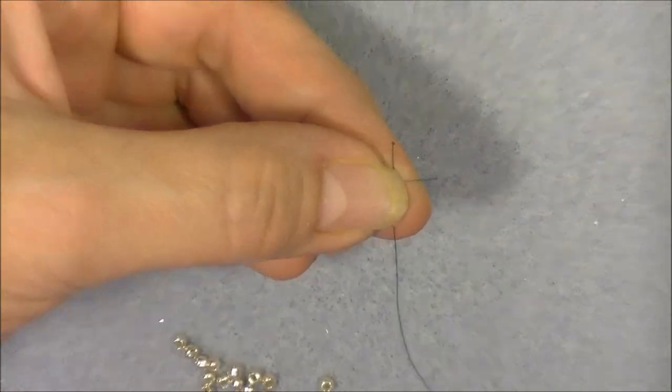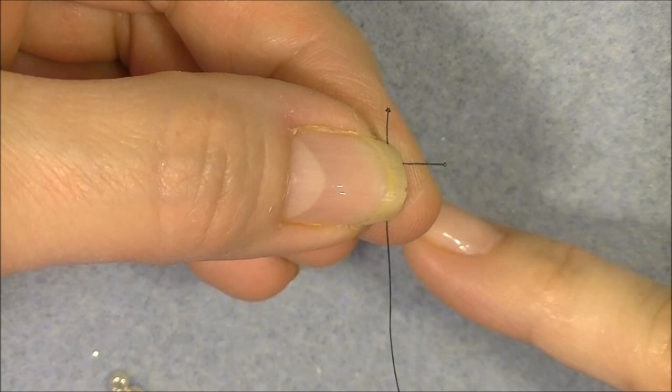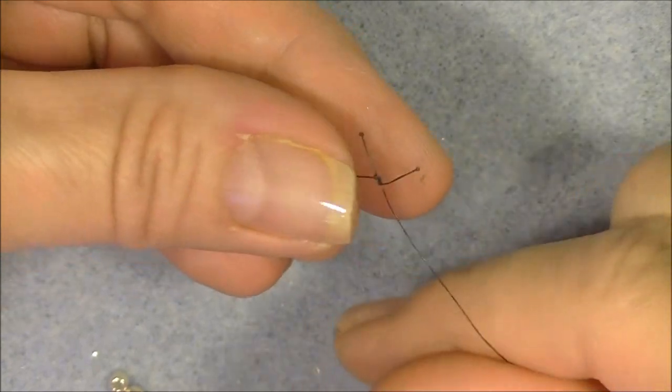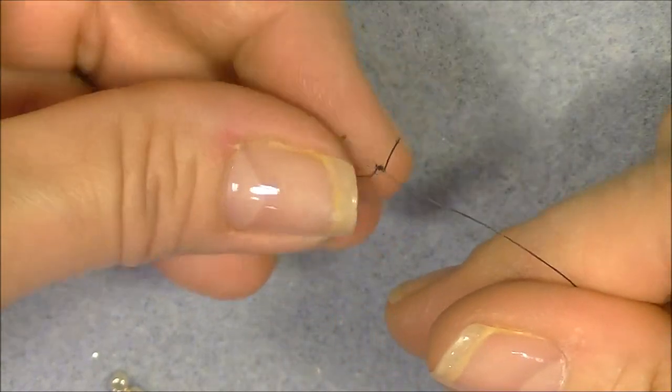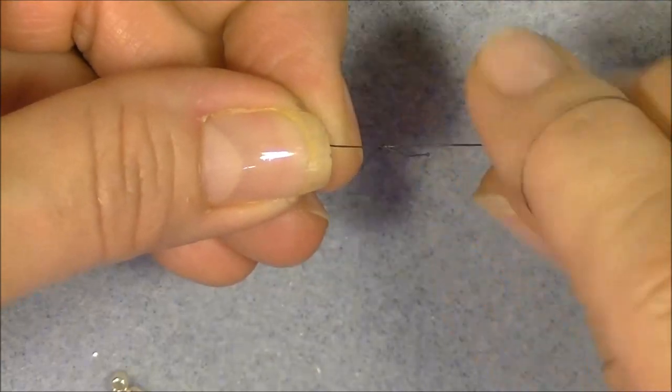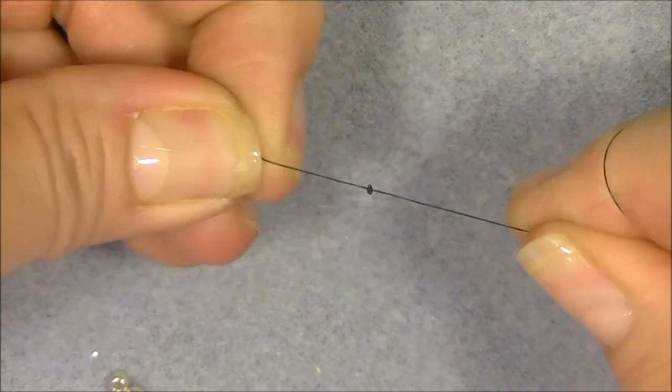Now if you can see this, you can see I have two little balls on the end of my thread. Now I am just going to hold on to my piece and my working thread that I'm adding and I'm going to pull.